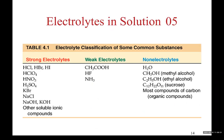Examples of strong electrolytes: sodium chloride, KBr, sulfuric acid, nitric acid, perchloric acid, hydrochloric acid, and hydrobromic acid. Experimentally, these are proven to be 100% dissociated in water — they produce ions, so they are strong electrolytes.